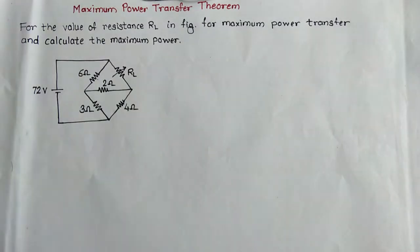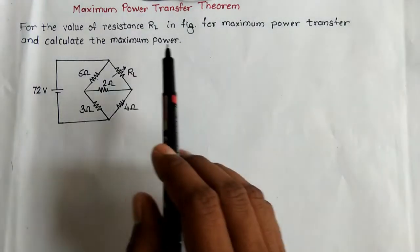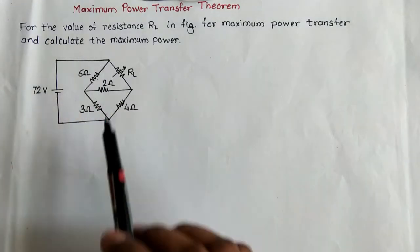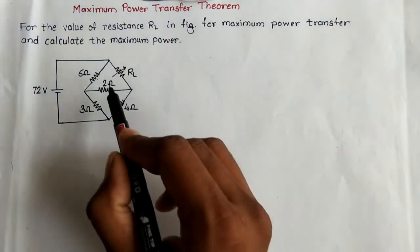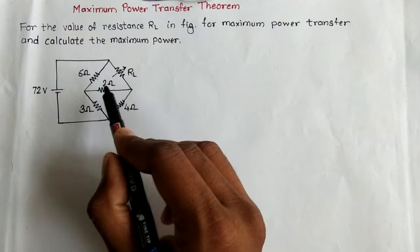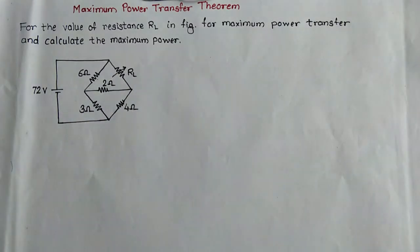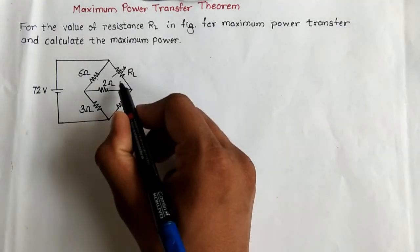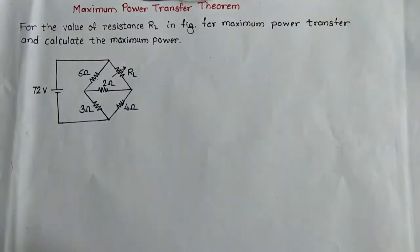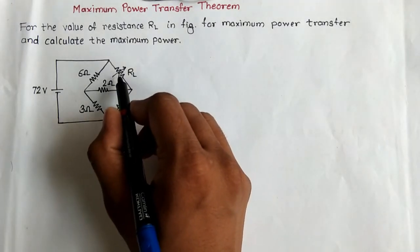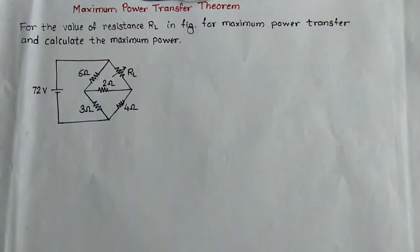Here is the problem: find the value of resistance RL in the figure for maximum power transfer, and calculate the maximum power. So we have to find the value of RL first and then calculate the maximum power delivered to this load resistance RL.